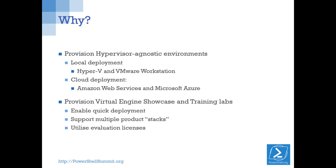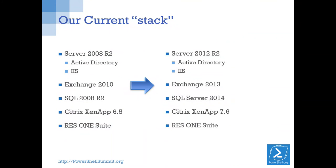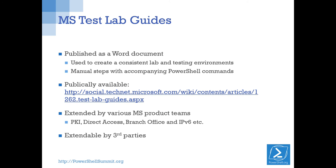I picked on Microsoft test lab guides because they're a common kind of set of stuff that's out there. From our perspective we've got Server 2008 R2, Active Directory, IIS, Exchange, SQL, Citrix XenDesktop, and the RES stuff. We need to be able to go to Server 2012, and Server 2016 is around the corner. So how can we spin up these environments very quickly and cheaply?